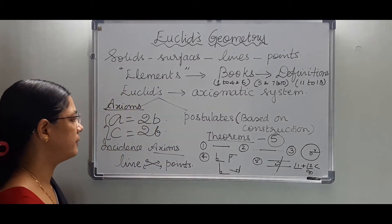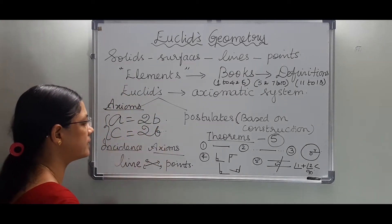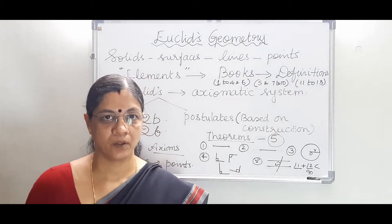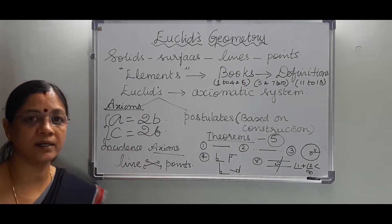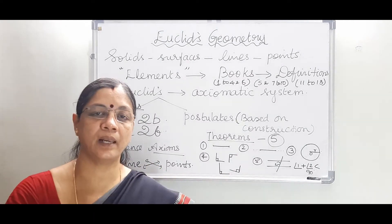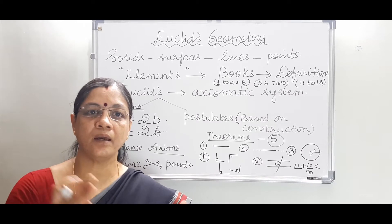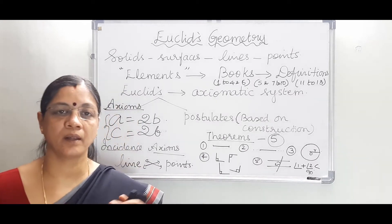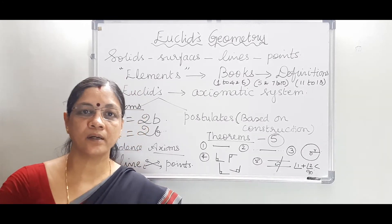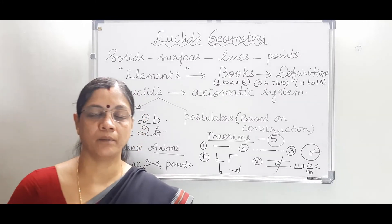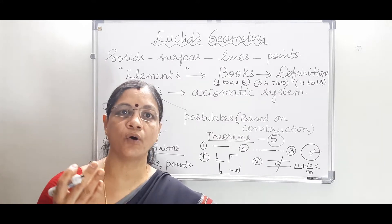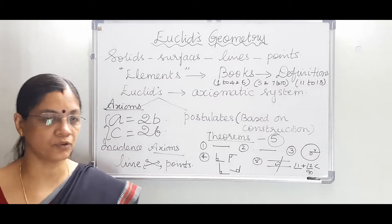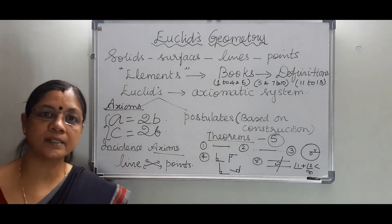On the other hand, he propounded some other axioms called incidence axioms. From these we understand there is a link between lines and points. He correlated lines and points together and gave us incidence axioms, which resulted in more theorems and facts that are followed even today in geometry. These were called incidence axioms.